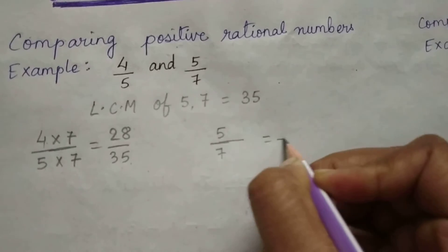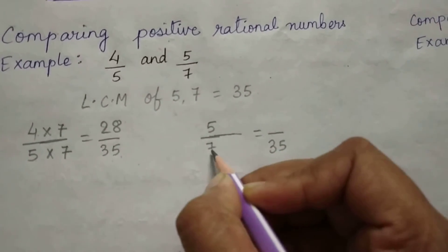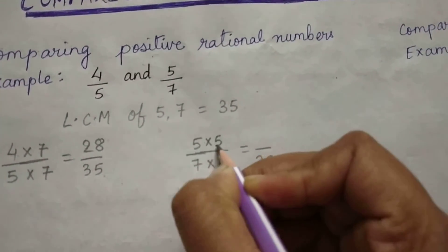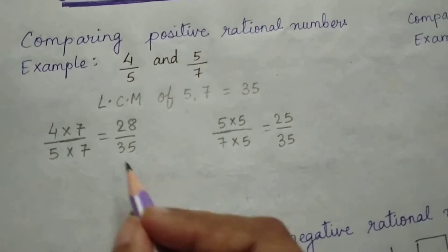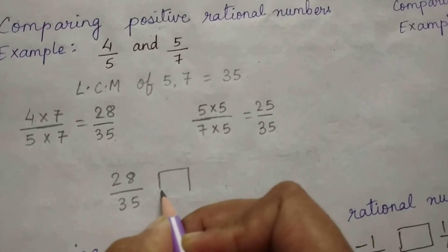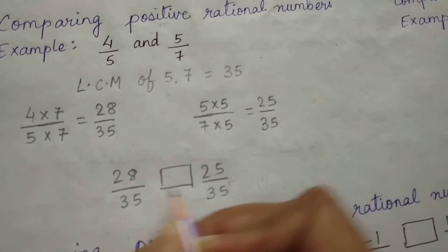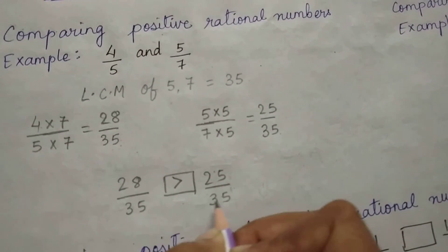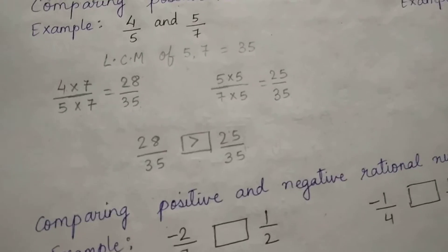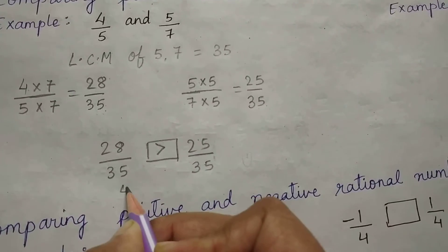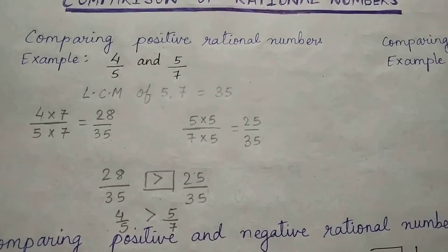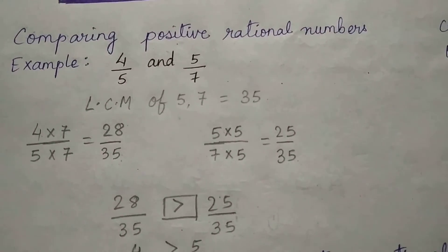Similarly, convert 5 by 7 with denominator 35. Since 7 into 5 is 35, multiply 5 with the numerator as well. 5 into 5 is 25, giving 25 by 35. Now compare the two equivalent rational numbers: 28 is greater than 25, so 28 by 35 is greater than 25 by 35. Therefore, the original rational number 4 by 5 is greater than 5 by 7. This is the same method used for fractions.